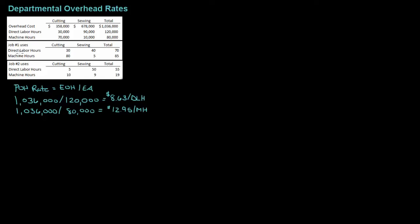Let's take a look at Job Number One. Job Number One uses a total of 70 direct labor hours and 85 machine hours. If I was going to apply these plant-wide overhead rates to Job Number One, I would take $8.63 per direct labor hour times 70 hours, and that gives me a total overhead cost of $640.10.